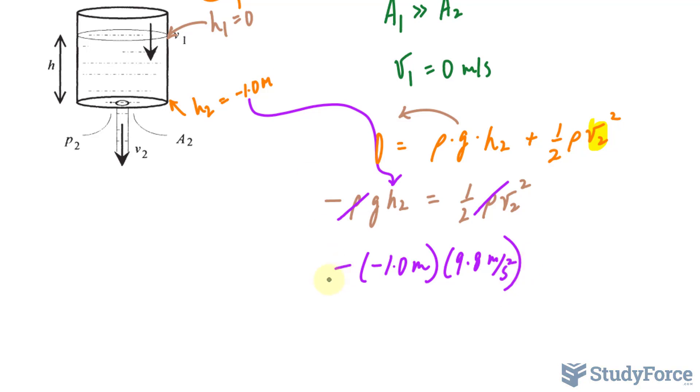All right. Notice that these two negatives cancel out, becoming positive. And on the right side, we have a factor of half times V sub 2 to the power of 2.